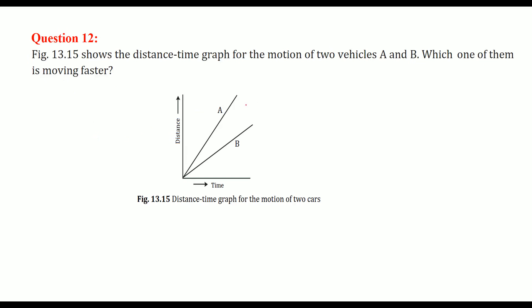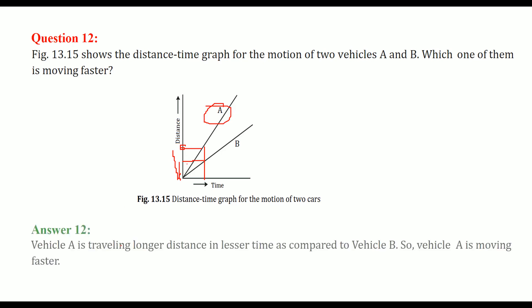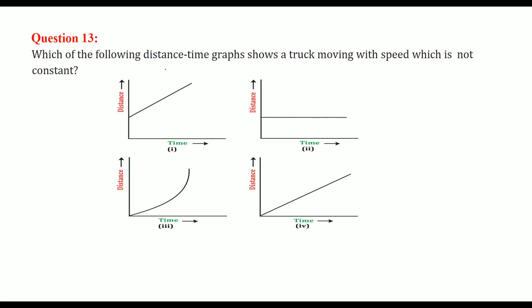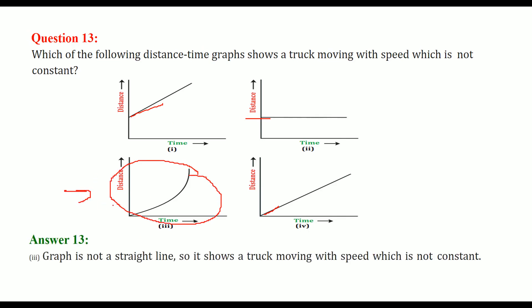This figure shows the distance-time graph for the motion of two vehicles A and B. For a particular time, the distance traveled by A is more than the distance traveled by B — that is why A is moving faster. Vehicle A travels a longer distance in less time compared to B. For a non-constant speed truck, the distance-time graph is not a straight line, indicating variable speed.